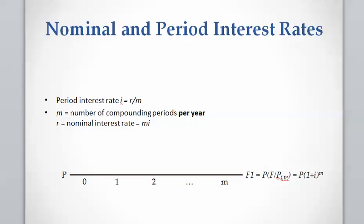In this video I'm going to explain how to calculate the effective interest rate. In a previous video we learned how to calculate the period interest rate, which is the nominal interest rate R divided by the number of compounding periods per year M. To calculate the future value you will need to know the number of periods from present time to the desired future.